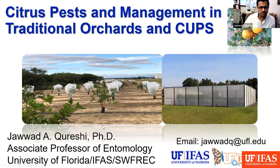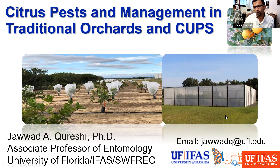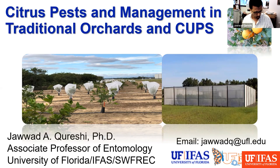That's why we see this transitioning. As you see in these pictures, this is the individual protective covers or tree defenders, with the objective to protect the trees from this vector and disease in the early years of production, to increase their chances of survival, or transitioning into these larger structures — protective structures called CUPS, citrus under protective screens — so that basically the crop can be grown all the way from a young tree to production for several years.